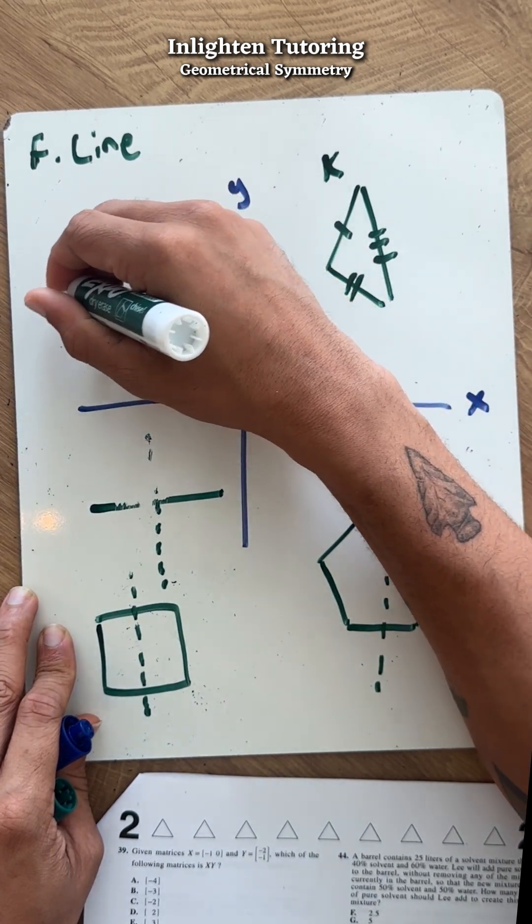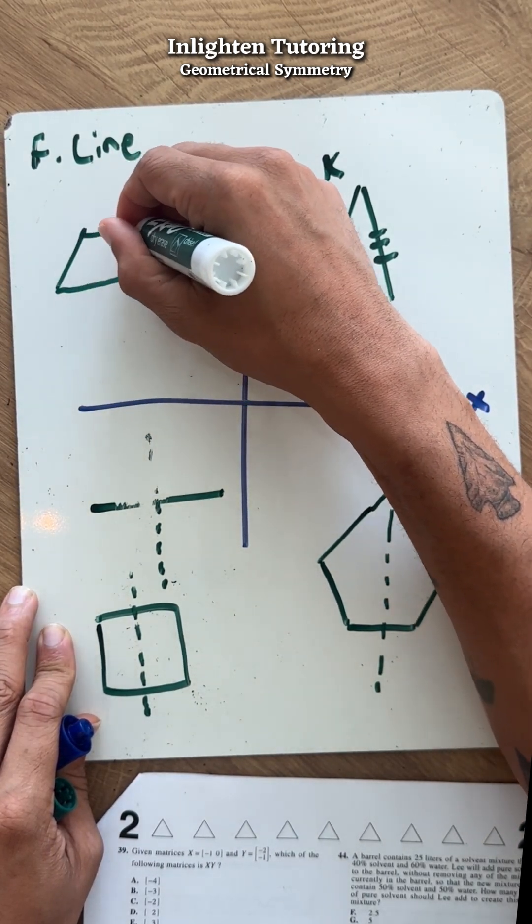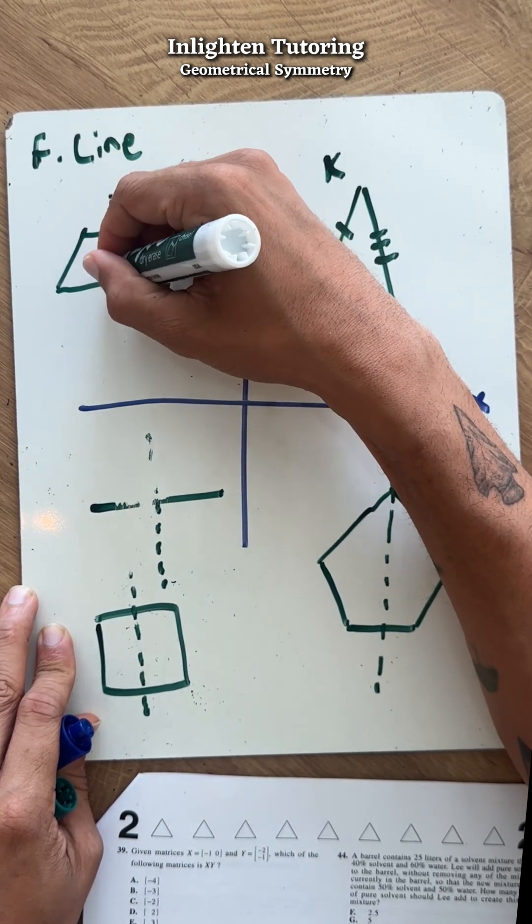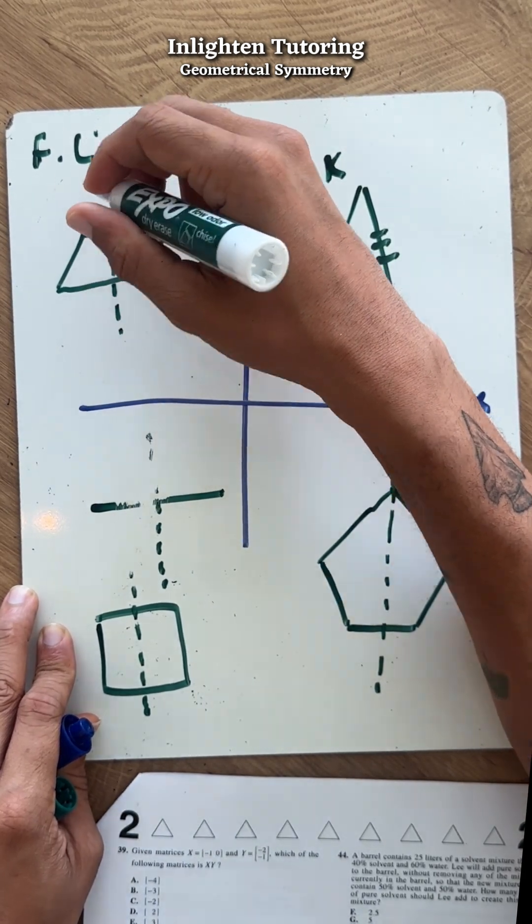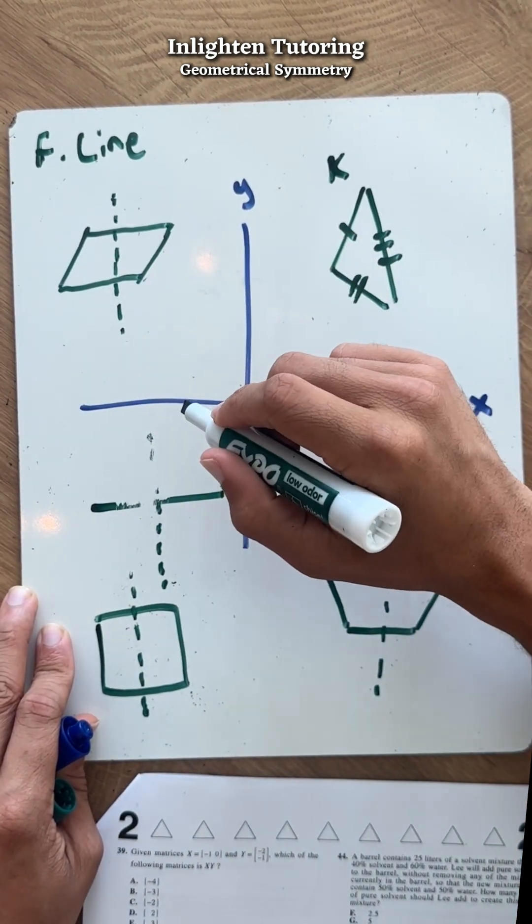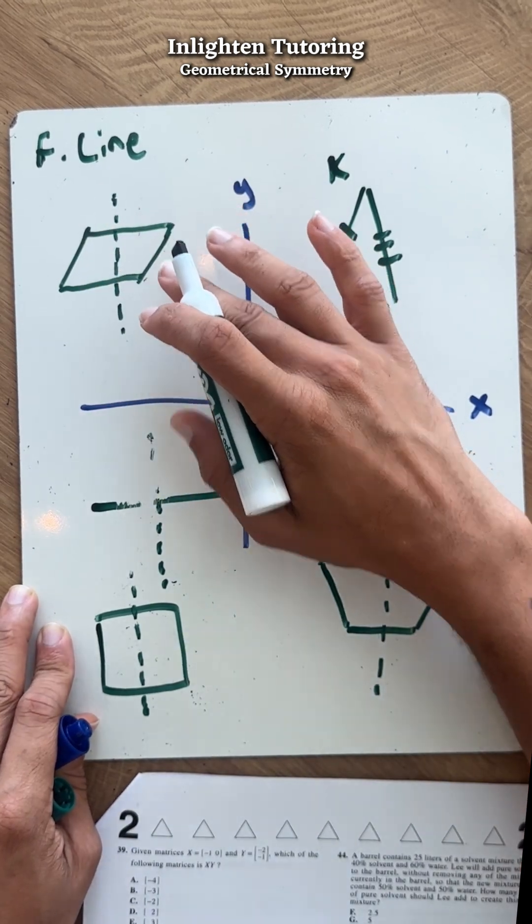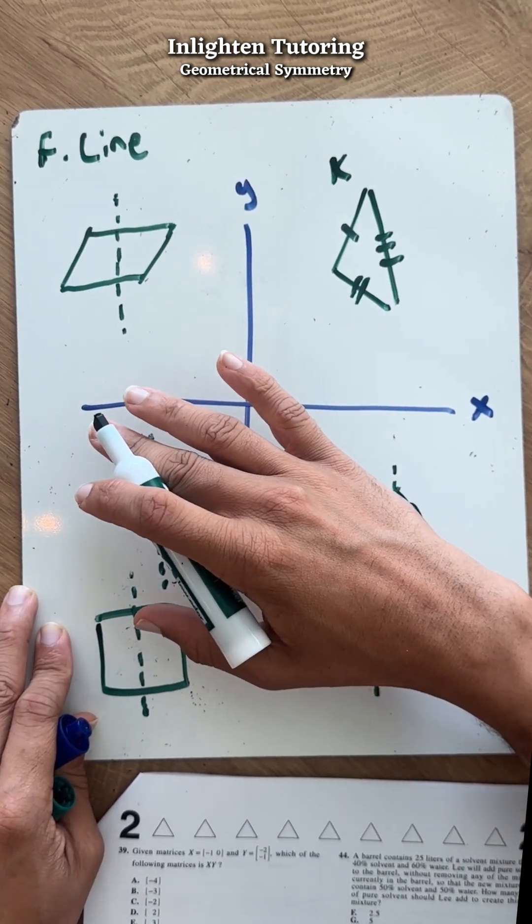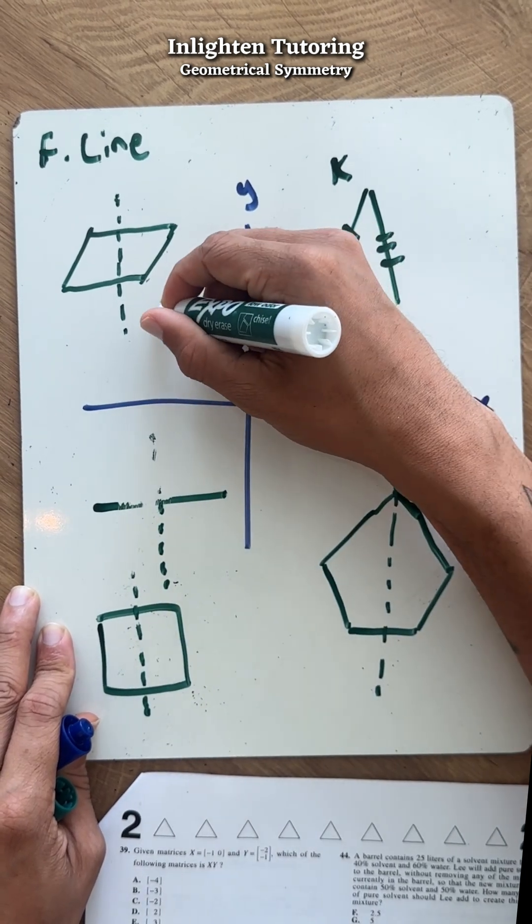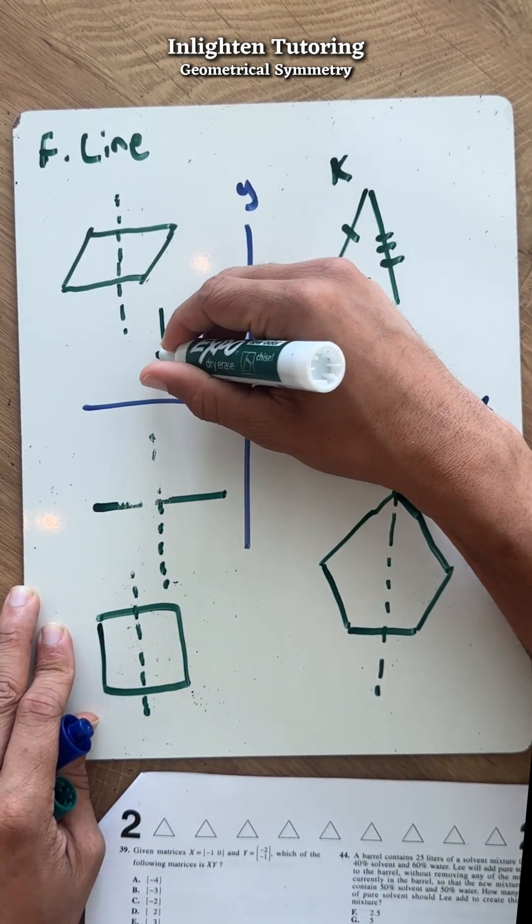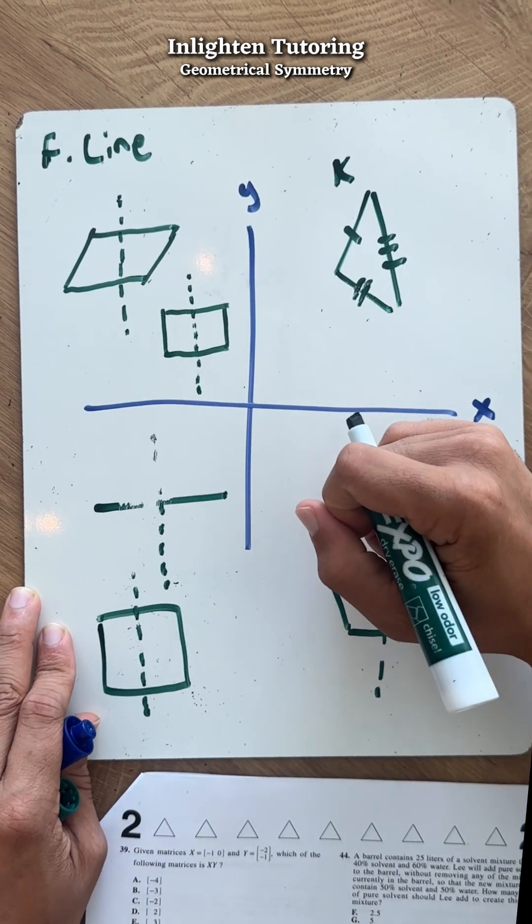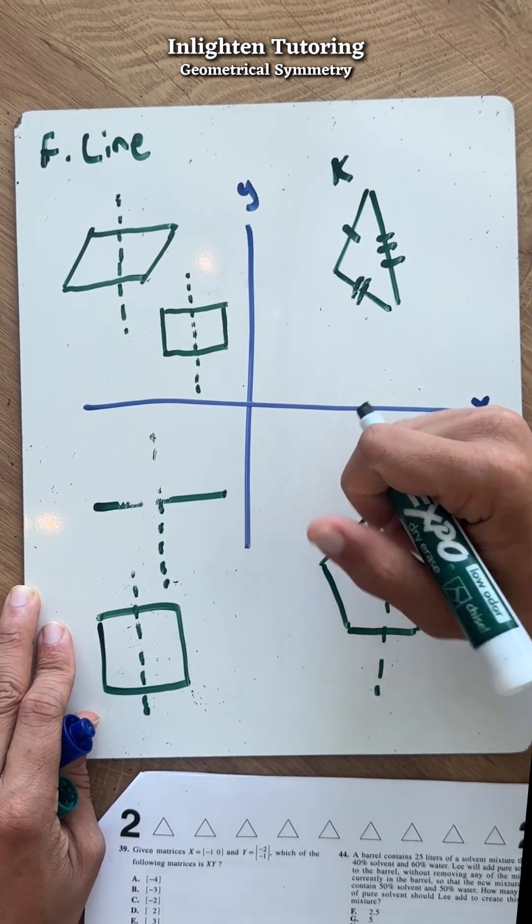Normally a parallelogram looks like this - it's got a little slant to it. Technically, the definition of a parallelogram is any four-sided figure with parallel sides. If you fold this over, it's actually not going to have a line of symmetry for a parallelogram drawn like this. However, what is also a parallelogram is a rectangle. If I fold over a rectangle, it will have a line of symmetry. Make sense?